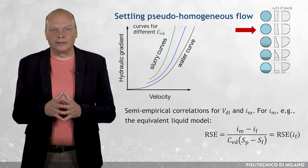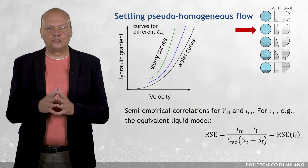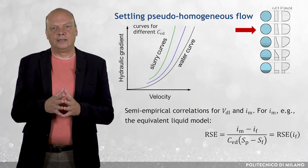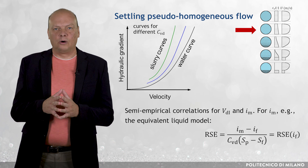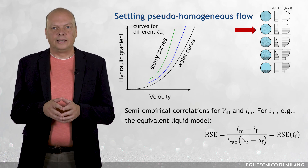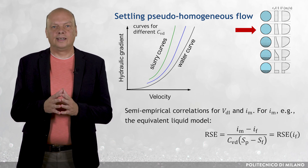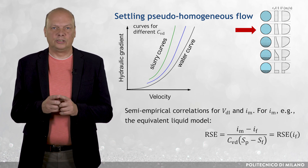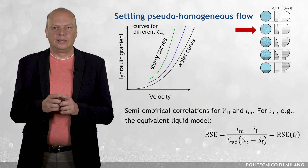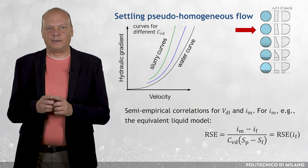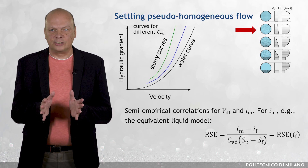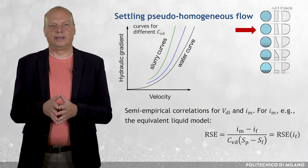Predictive modeling of the friction loss in pseudo-homogeneous Newtonian slurry exploits the concept of equivalent liquid. It simply assumes that at velocities of practical interest, the pseudo-homogeneous flow behaves as a single-phase liquid with the density of the slurry and the viscosity of the carrying liquid.